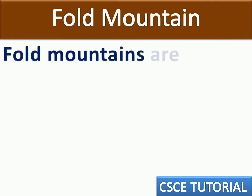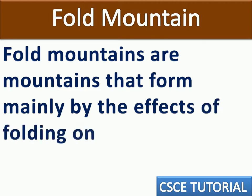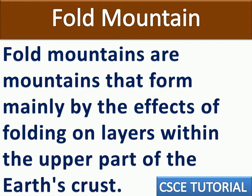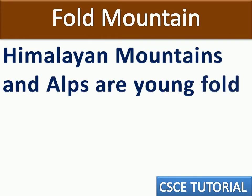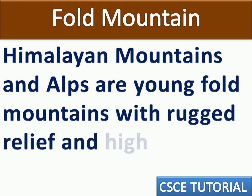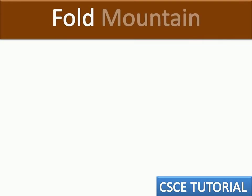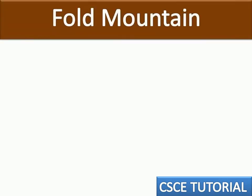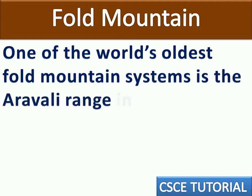Fold mountains are mountains that form mainly by the effects of folding on the layers within the upper part of the Earth's crust. When tectonic plates have pressure applied from both sides, the layers fold, forming fold mountains. The Himalayan mountains and the Alps are young fold mountains with rugged relief and high conical peaks.